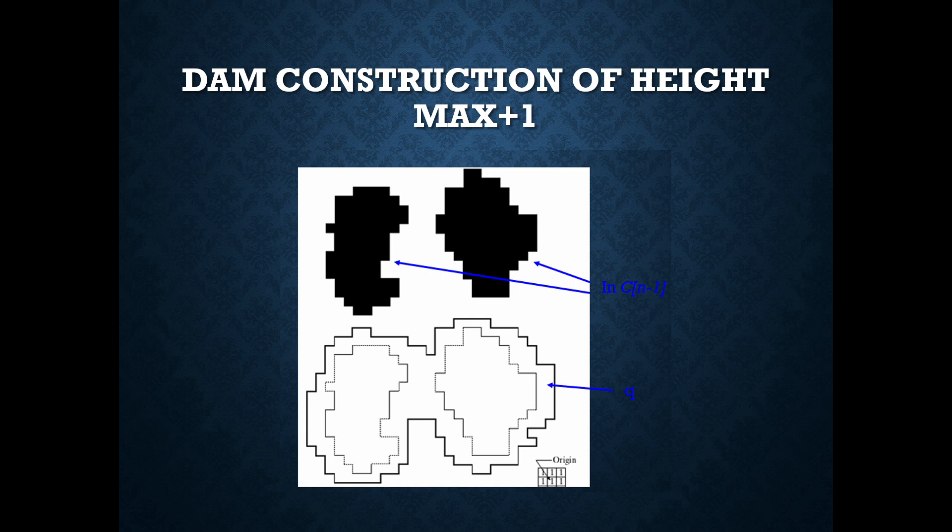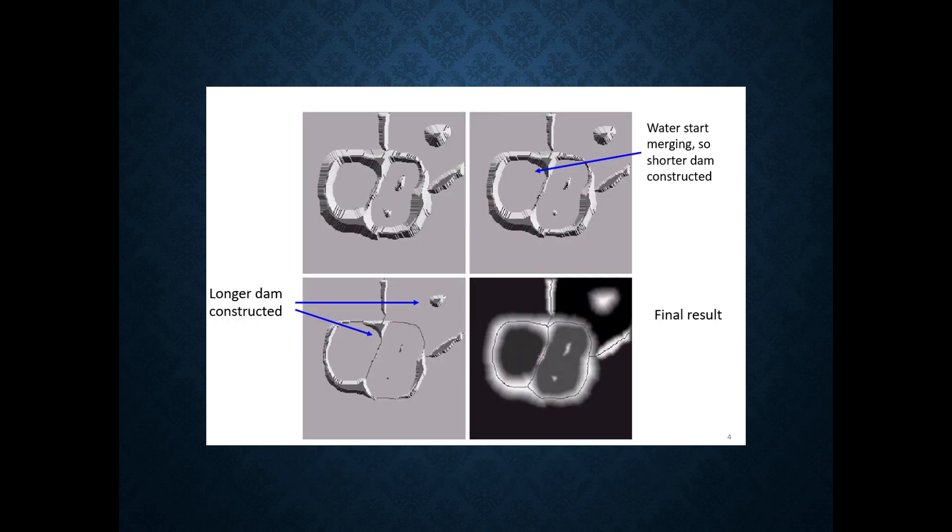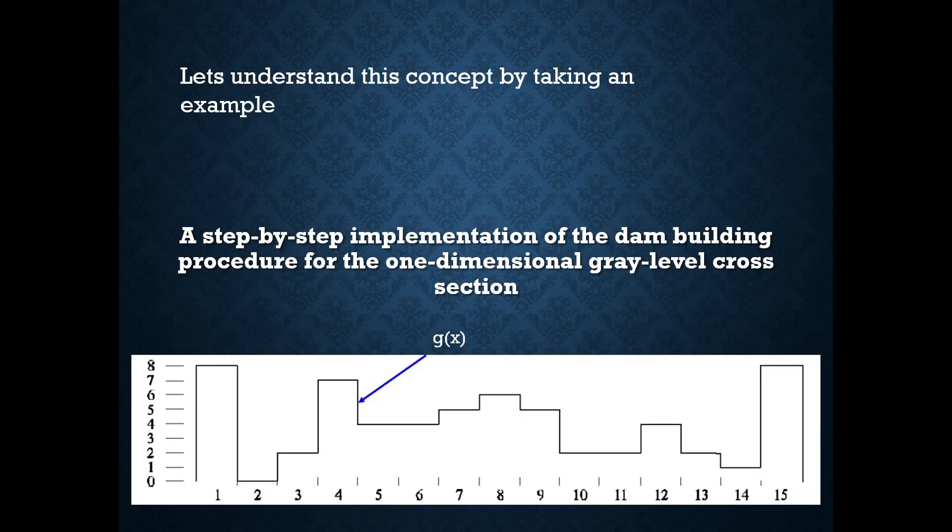The dam is constructed of height maximum of M-1. The water started to merging to stop that a small dam is constructed. Later, the water flow will be increasing so that a longer dam is constructed.